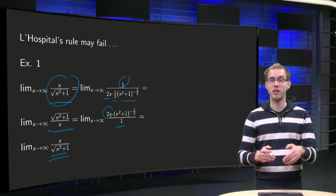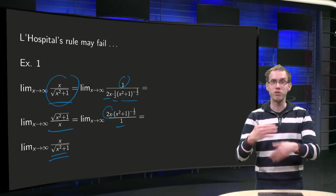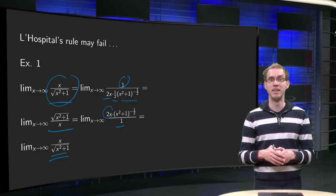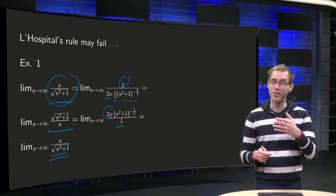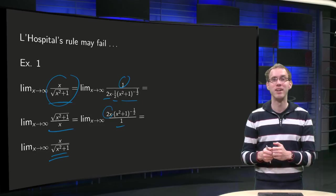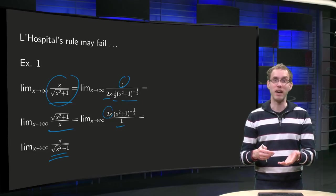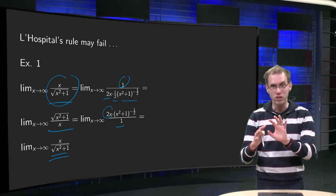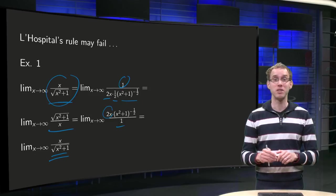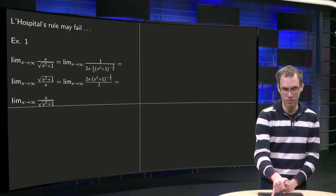So we can apply L'Hôpital's rule again and again, but we will only get our same limit again and again. That means that what we did is not wrong—we get limit equals limit, so that's fine—but that doesn't help us at all. So we have to think of something different.